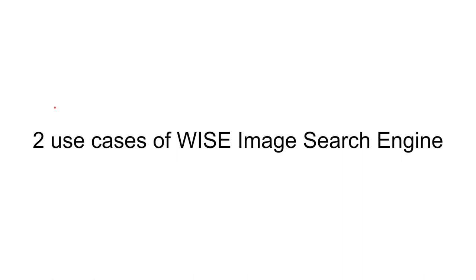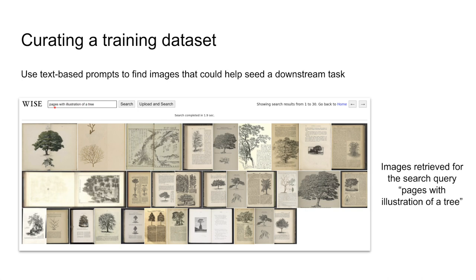Let me show you a couple of use cases for this content-based search engine. We can use the search engine with multiple text-based prompts to curate images for training a classifier. We can then use the classifier to categorize new images that are uploaded. Here I show an example of a query, "pages with illustration of a tree," to train a tree illustration classifier for book pages. We could also build a content classifier to find explicit and not-safe-for-work images to help with content moderation.